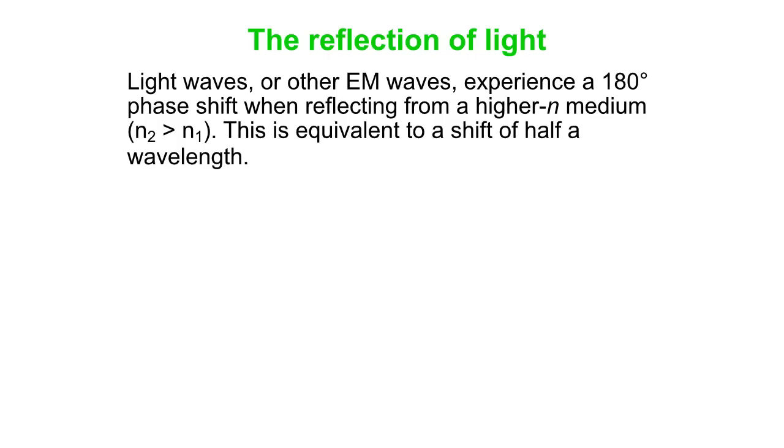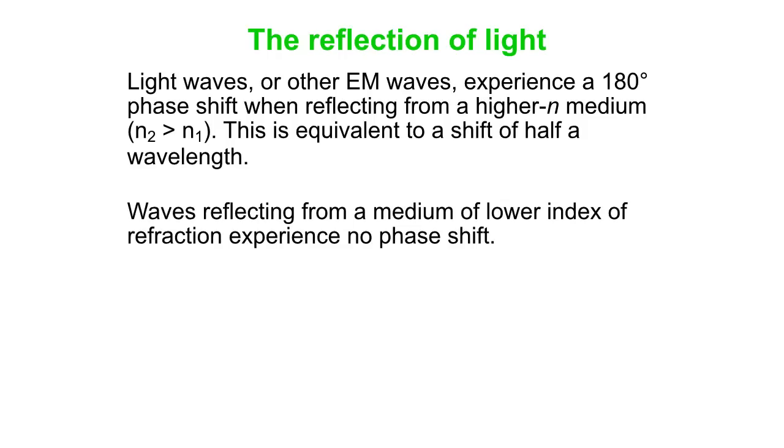When we get to light, light waves also experience the same kind of thing. If an electromagnetic wave or a light wave hits a higher N medium, so let's say it's in air and bouncing off a piece of glass, that's N2 bigger than N1, then when it reflects, it experiences a 180-degree phase shift. In other words, it's like it shifts half a wavelength. If you reflect off a medium of lower index, you're in glass and you bounce off a glass-air interface, then there is no such phase shift. That's important when it comes to understanding our analysis of thin films.